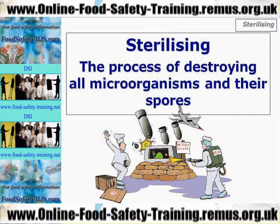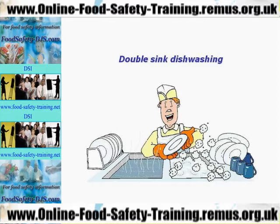Disinfection reduces bacteria to a safe level — it doesn't kill spores. As an example of the misuse of the term sterilising, you'll sometimes see double sink dishwashing in places like school canteens, where one sink contains a detergent and a second sink, sometimes called a sterilising sink, contains very hot water above 82 degrees Celsius. This is in fact a disinfecting sink, not a sterilising sink.